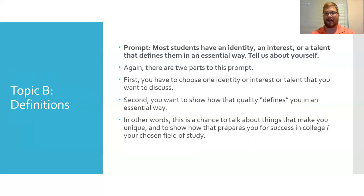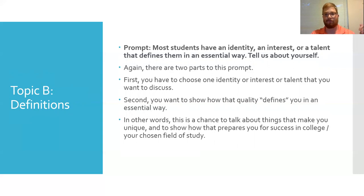Once you've selected that identity, interest, or talent, you want to show how it defines you and develops the values you want to talk about. Similar to Topic A, think about what values you want to demonstrate to the reader — honesty, integrity, hard work — and then think about what identity, interest, or talent sets that up for you. You really want to talk about what makes you unique and how that prepares you for success at the next level.